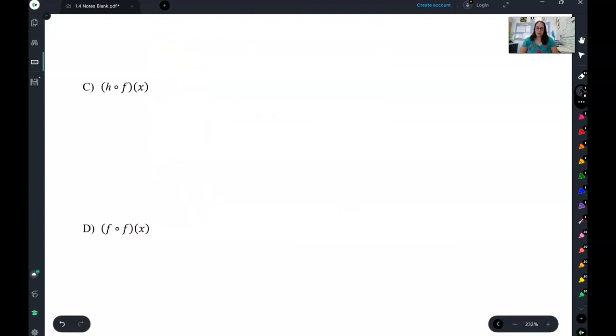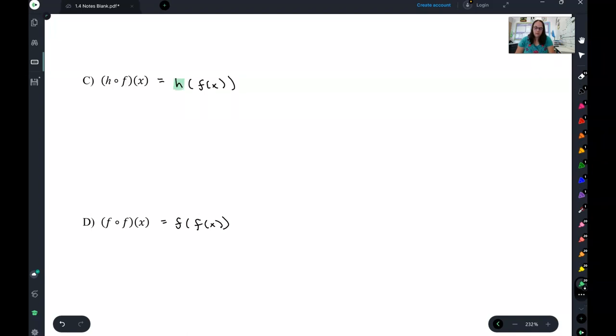So, having practiced this a little bit, I would like you to try examples c and d. Remember to rewrite them so it's a little easier to see what is the outside function, what's the one that gets the big parentheses? And what is the inside function, which is what you plug in to those big parentheses? So, pause the video and try that out on your own.